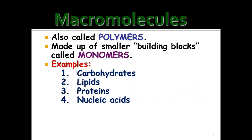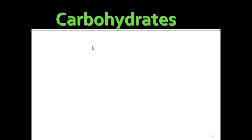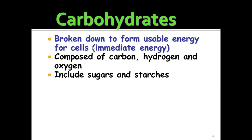Here are the four types of macromolecules: carbohydrates, lipids, proteins, and nucleic acids. Make sure you get comfortable saying those words. The function of carbohydrates — carbohydrates break down to form usable energy, so they give you immediate energy. They're composed of carbon, hydrogen, and oxygen, which includes sugars and starches.